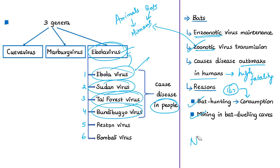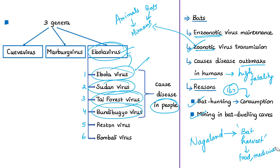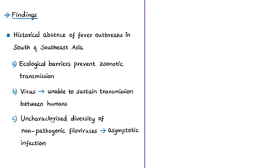The study was conducted in Nagaland because local ethnic groups have conducted bat harvests for at least seven generations. For them, bat harvest is a source of food and traditional medicine. These bat hunters are exposed to saliva, blood, and excreta from bat species. The study conducted a serological survey of hunted bat species and the same survey in human hunters, to study if humans have been exposed to filoviruses potentially originating from bats.